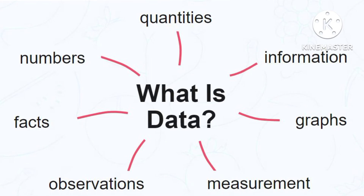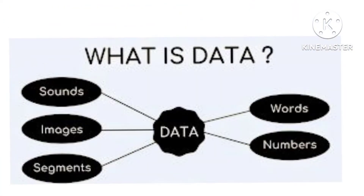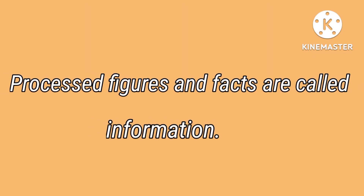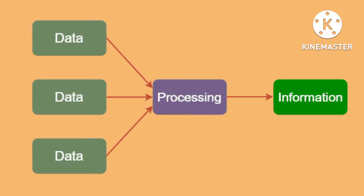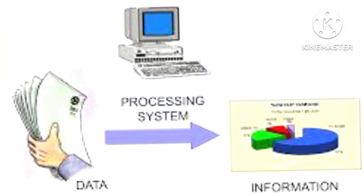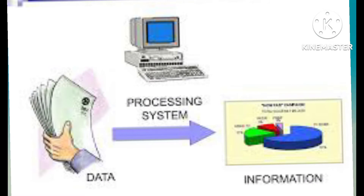Data are facts and figures that need to be processed by a computer. The processed figures and facts are called information. We say that data are facts and figures that need to be processed by a computer, and processed figures and facts are called information.